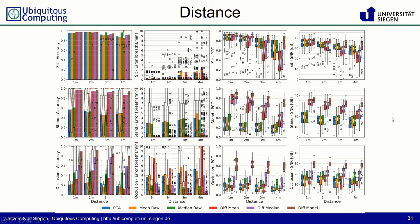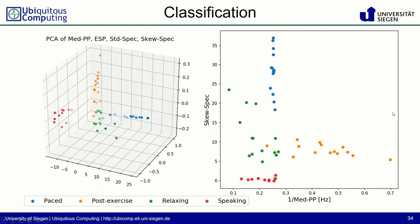We can now do remote respiratory rate detection. What can we do with this? One application is activity recognition. Here we have four scenarios: paced breathing at 10 breaths per minute, a post-exercise scenario where participants ran up and down six floors, a relaxing session watching a landscape video with background music, and a speaking session where users read aloud. In feature space, we can well separate these different activities, even with only two features.